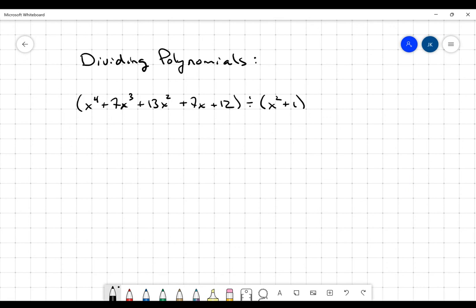So we've got a quartic, we're dividing by a quadratic. So I'm just going to set this up and do long division for this one. So it'll be x to the fourth plus 7x cubed plus 13x squared plus 7x plus 12.